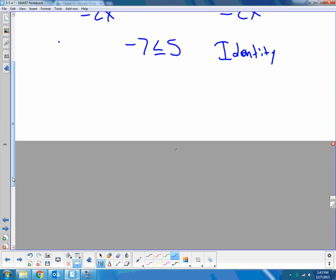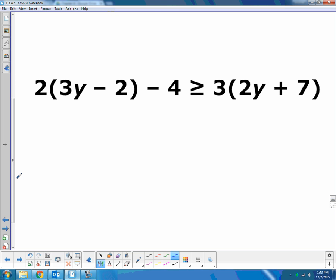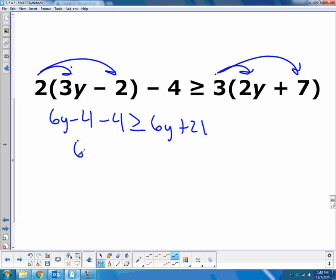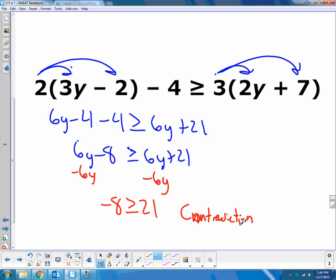I'm going to look at the next one then. Same idea, I'm going to get y by itself, or try to anyways. But first I've got to get rid of some of these parentheses and simplify. So I'm going to distribute through the parentheses. I end up with 6y minus 4 minus 4 greater than or equal to 6y plus 21. I'm going to combine the things that I can. So I've got minus 4 minus 4. That's 6y minus 8 is greater than or equal to 6y plus 21. And you can already kind of see what's going to happen if I get my y's all together, or eliminate them from both sides in this case. Negative 8 is greater than or equal to 21. There's one that is not true. So that is a contradiction.